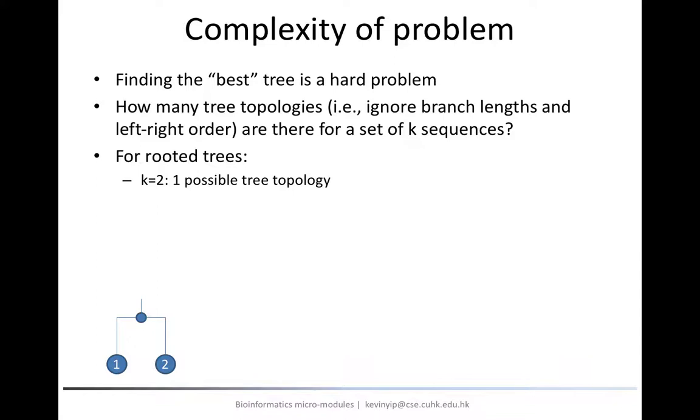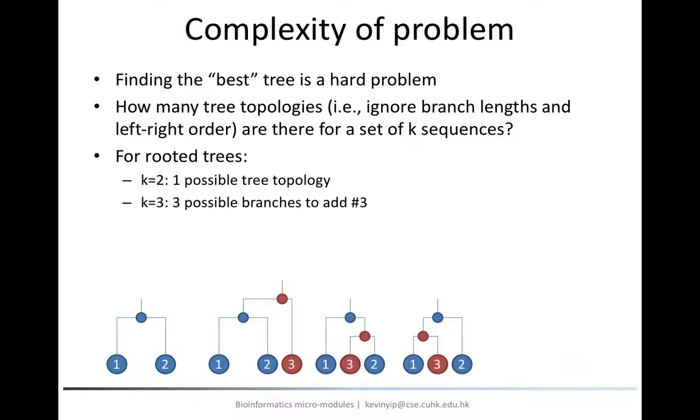To calculate the number of possible tree topologies when there are more input sequences, we consider the case of three input sequences. There are only three possible locations to add a third sequence to the tree topology containing sequences 1 and 2, namely,